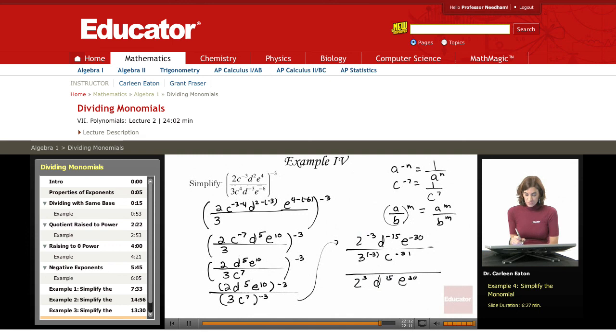In the denominator, I have three to the negative three. That's going to go up to the numerator and then C to the twenty-one.